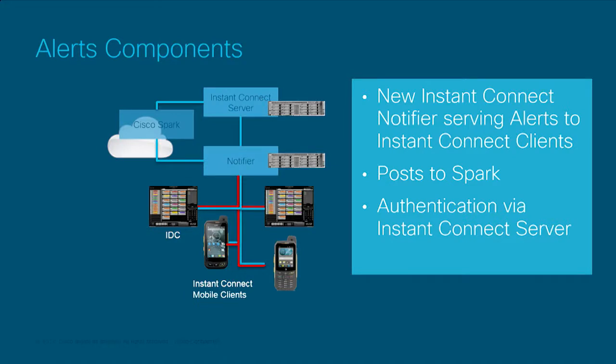We have SDKs and APIs. Looking at the connectivity flow for the notifier: the notifier lives in both the Instant Connect server and the notification server. When emergencies happen, it comes into the system and can send messages into the Spark room — it posts to the Spark room. We authenticate the notifying server to the Instant Connect server, and it's another way to communicate events, alarms, and emergencies in the system.